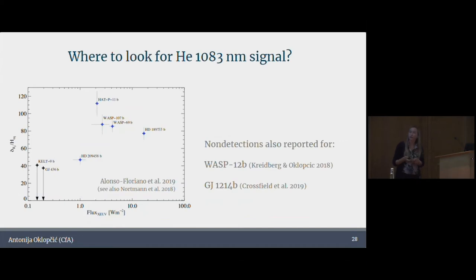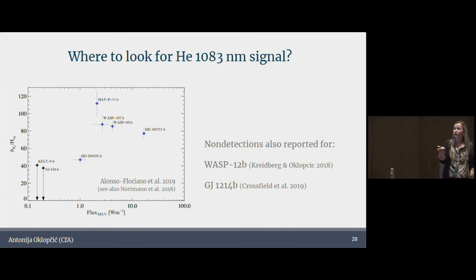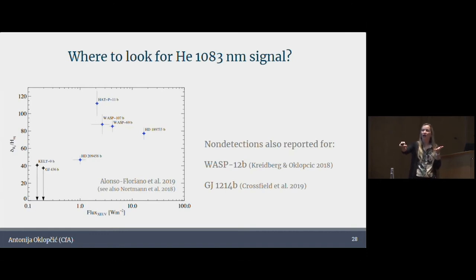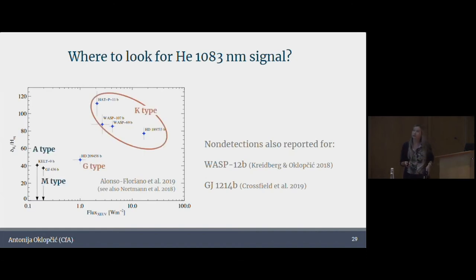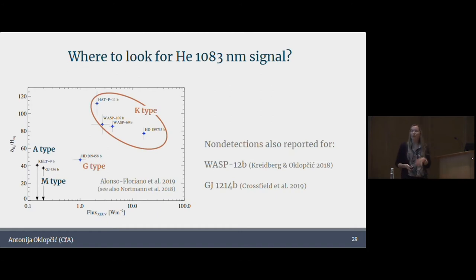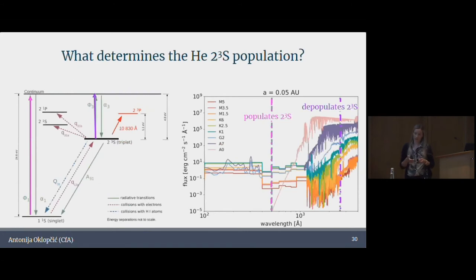People often ask where we should look for these planets. This plot shows the strength of the helium feature as a function of extreme UV flux of the host star. All the detections are here, and these are non-detections. There seems to be a relationship between whether or not we see helium in a planet and how much XUV flux we see from the star. But it's also really interesting to look at the spectral types of these host stars — all of these planets with the strongest signals orbit around K-type stars, whereas the non-detections are around A, M, and G type stars.